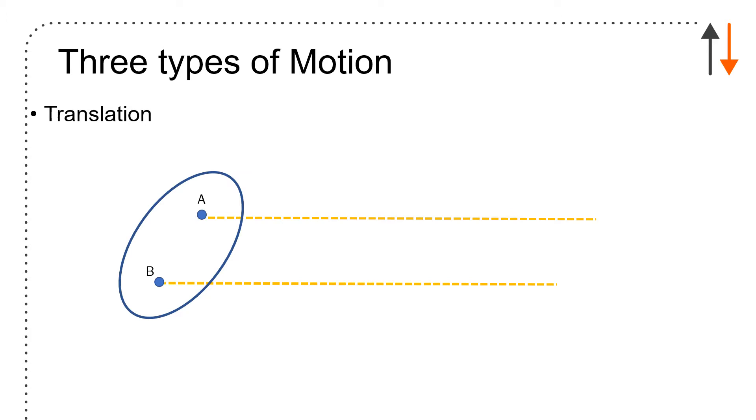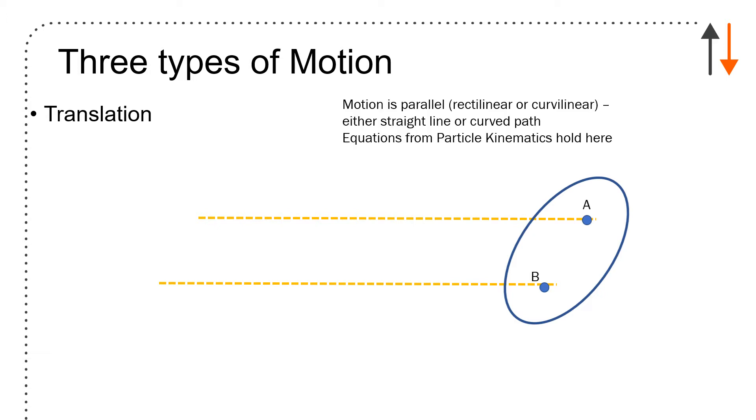We have three types of motion that result. We have translation, which is just either straight line motion or curvilinear translation, where the object goes along a curved path. You'll notice that those points A and B do not shift location - they stay at the same separation and the same angle with respect to each other. Motion is parallel, rectilinear or curvilinear, either straight line or curved path. The equations for particle kinematics still hold because you're not really dealing with rotation.